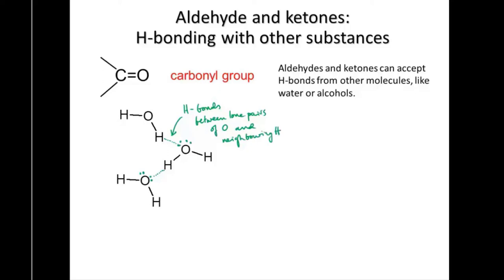To make it explicit: there is a partial positive charge on the hydrogens and a partial negative charge on the oxygen. Now, if methanol is added to water, methanol also has lone pairs on its oxygen atom, and that oxygen is therefore able to form hydrogen bonds with neighbouring water molecules. For instance, there could be a hydrogen bond between that oxygen atom and the hydrogen of a neighbouring water molecule.